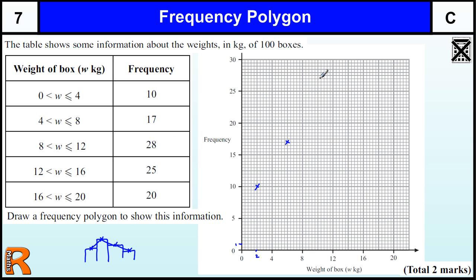We plot the number 28, which is going to be 4 squares less than 30. And then we've got 25, which is going to be plotted at 14. And then we've got 20, which is going to be plotted at 18, which is there.